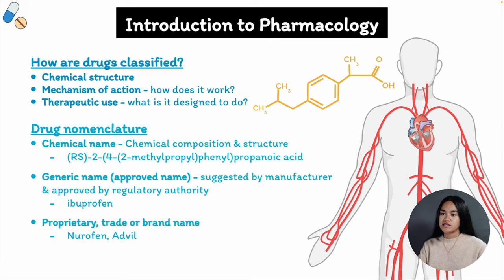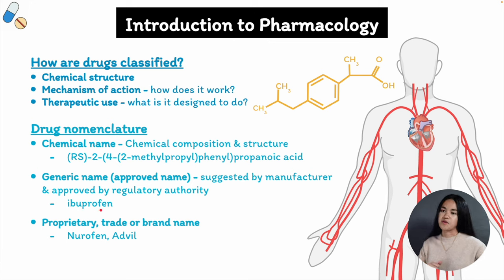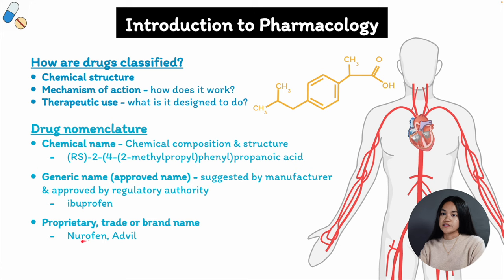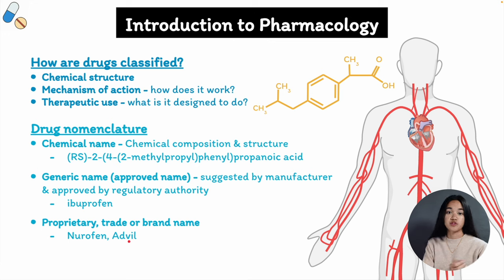Here's an example using a very commonly used drug. The generic name for this compound is ibuprofen — the approved name suggested by the manufacturer and approved by the regulatory authority. If you aren't familiar with ibuprofen, you are likely to be familiar with at least one of its trade or brand names. One trade name is Nurofen, another is Advil — it's the same chemical entity but manufactured and marketed by two different pharmaceutical companies. You can see the differences between chemical name, generic name, and trade name.